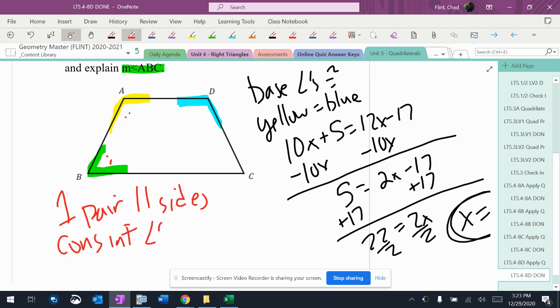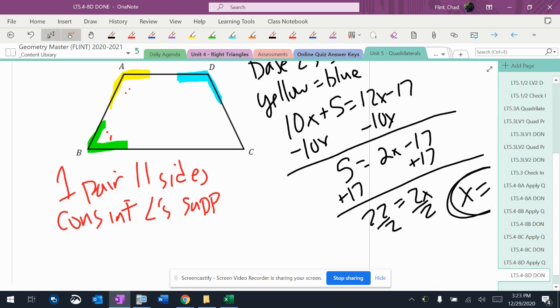Consecutive interior angles are supplementary. That means that yellow plus green equals 180 degrees.